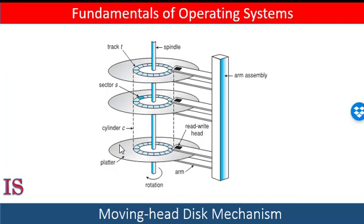Rotational delay is the time it takes for a piece of data to come around to the head where it can be read or written. Seek time is the time it takes for the arm to bring the head over the track to the location of that data. Access time, also called positioning time, is the combination of rotational delay and seek time.